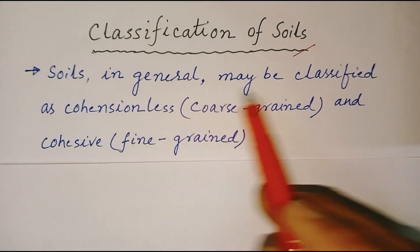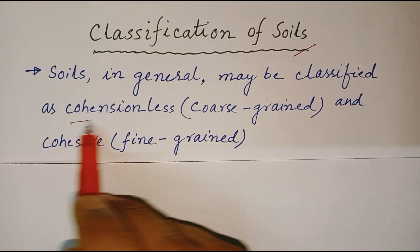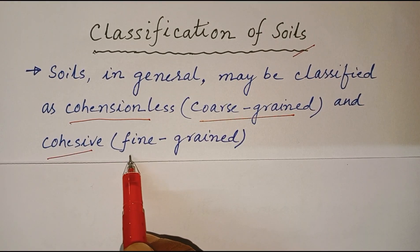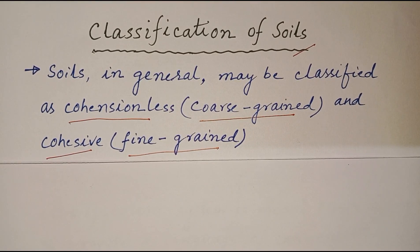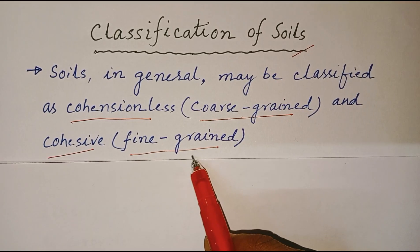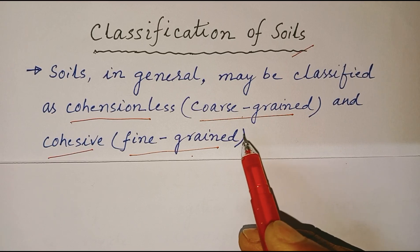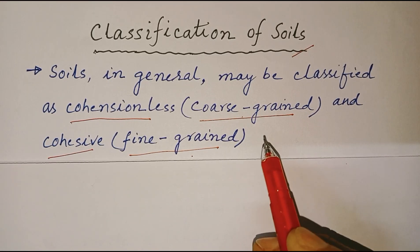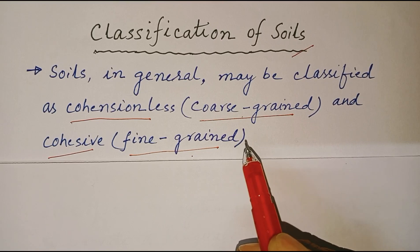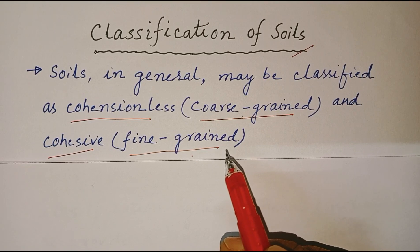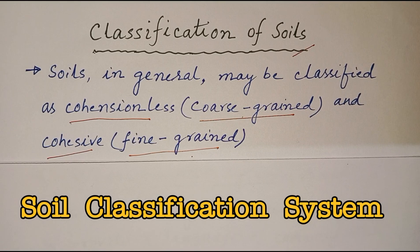Soils in general may be classified as cohesionless or coarse grained soil and cohesive, also known as fine grained soil. However, these terms are too general and include a wide range of engineering properties. Coarse grained and fine grained are too general and include a wide range of engineering properties. Hence, additional means of categorization are necessary to make the terms more meaningful in engineering practice. These terms are compiled to form a soil classification system.